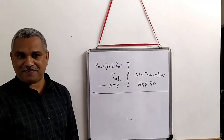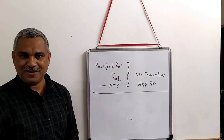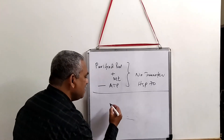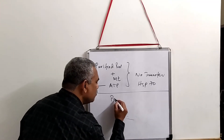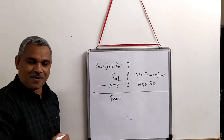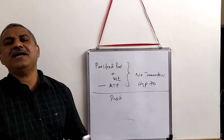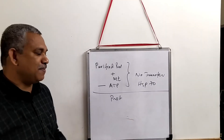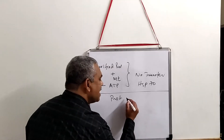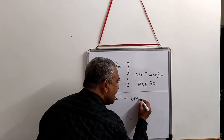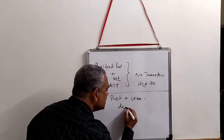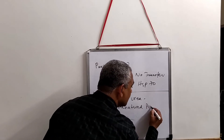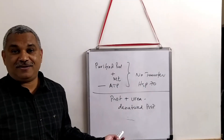They also did another experiment. They took the purified protein and denatured it — we know from Anfinsen's experiment that a protein can be denatured by adding urea — so therefore it is the denatured, unfolded protein.